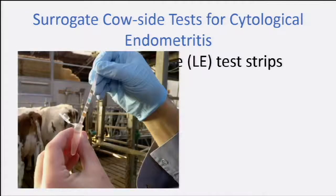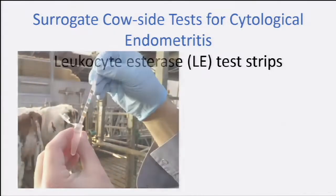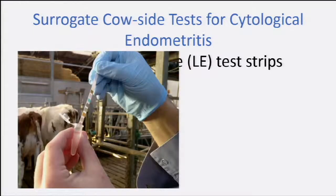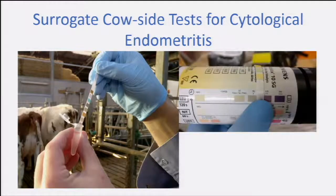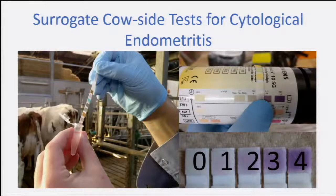Many people around the world already use leucocyte esterase strips to check for the presence of granulocytes in the sample. This technique is very simple: at the farm, you can have the liquid sample by placing the cytobrush in 1 mL of solution in an Eppendorf tube, or by lavage. You put the strip directly in the liquid, read it at the farm, and get a different classification of staining intensity. Based on different cutoff points, you can determine whether the cow has subclinical endometritis.